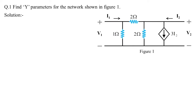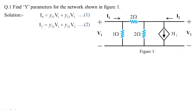Let us begin with the problem. We need to find out the Y parameters for the network shown in figure 1, which contains 3i2 — a current-dependent current source. We will directly go with approach 1, finding the Y parameters using the standard Y parameter equations for I1 and I2 as in equations 1 and 2. The only difference from previous examples is that here we have a dependent source.